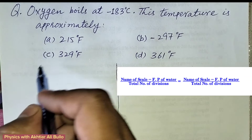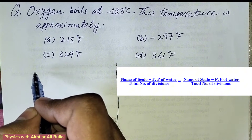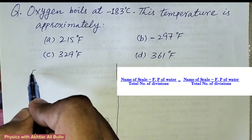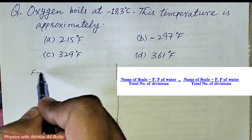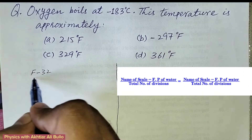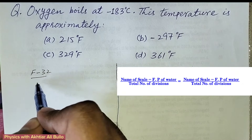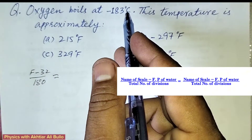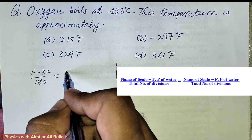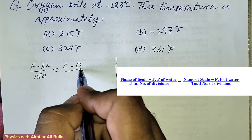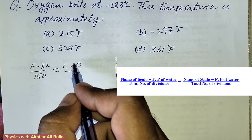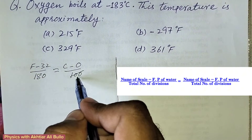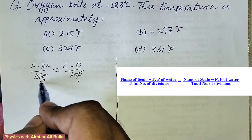Using the scale conversion formula: the name of scale minus freezing point divided by total number of divisions. For Fahrenheit: (F minus 32) divided by 180. For Celsius: (C minus 0) divided by 100. Simplifying, the ratio of 20 on 100 gives 5 times and on 180 gives 9 times, so the formula becomes (F minus 32) / 9 = C / 5.